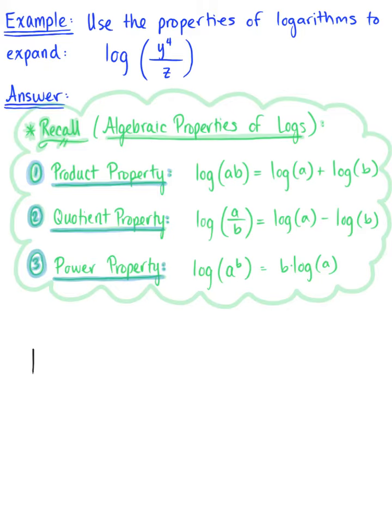So let's simply begin by thinking about what we are given here. We have the log of y to the fourth power divided by z. So notice that we have a quotient. We can see that we have y to the fourth divided by z. So we're going to begin here by applying the quotient property. And we can rewrite this as log of y to the fourth minus log of z.